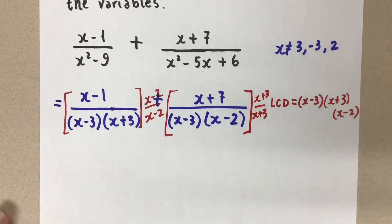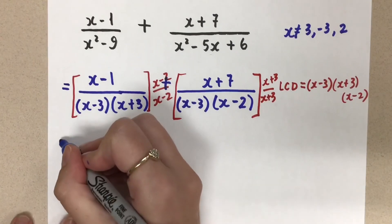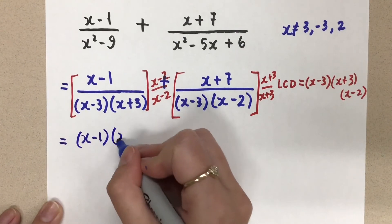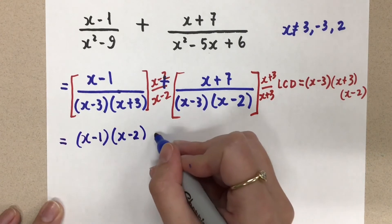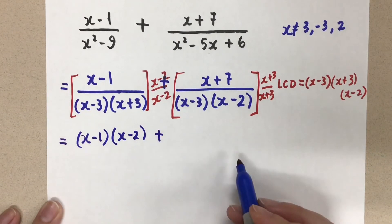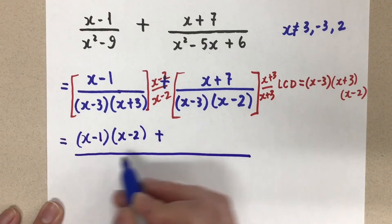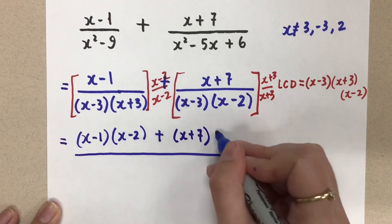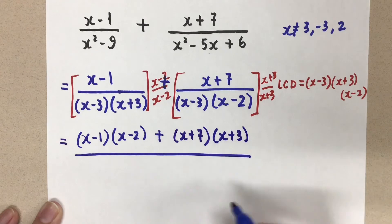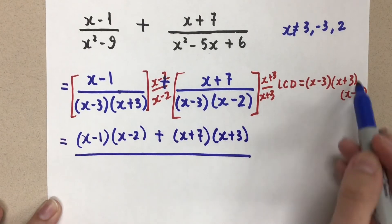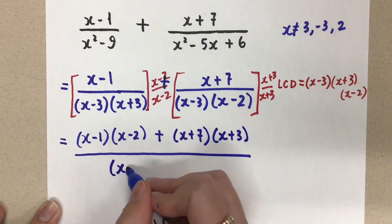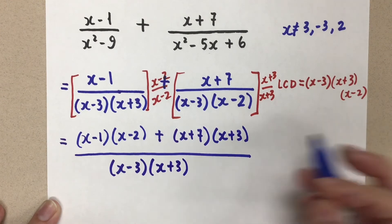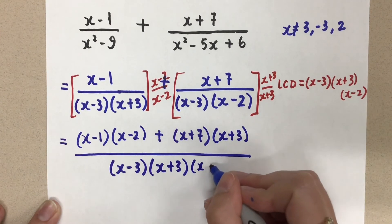Let's see what it looks like when I put this all together. So I'm going to have x minus one times x minus two in the numerator, plus — I'll do my denominator after — in the numerator, x plus seven times x plus three. The denominator is that lowest common denominator that we had. We keep the denominator the same when we're adding fractions like this, with the x minus two.